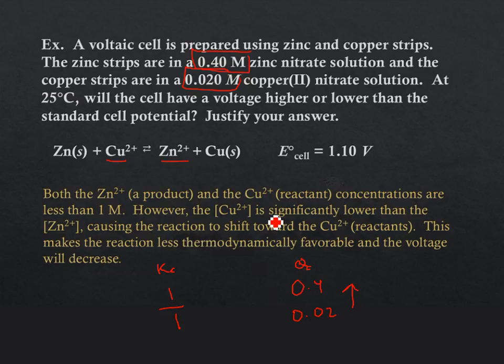So, because of that, we're going to subtract a larger value from our standard cell potential, which causes our reaction to shift towards the copper. We'll have lower concentration. This means we have essentially driven this reaction in this direction, which lowers our cell potential. This makes the reaction less thermodynamically favorable, and the voltage will decrease.